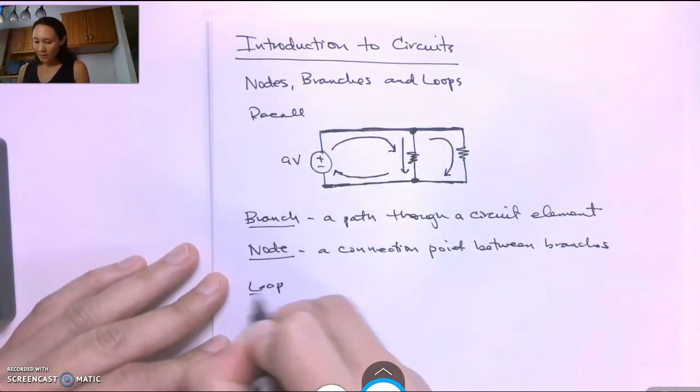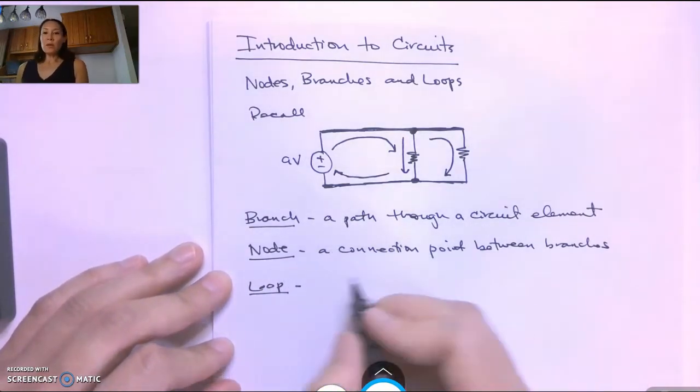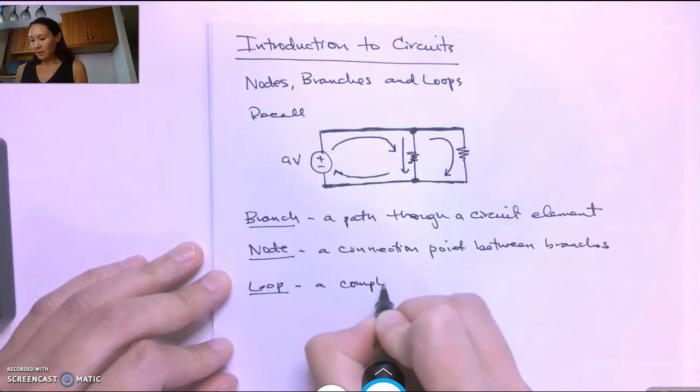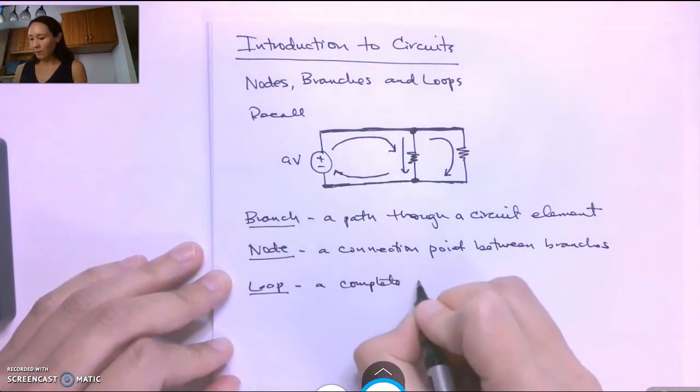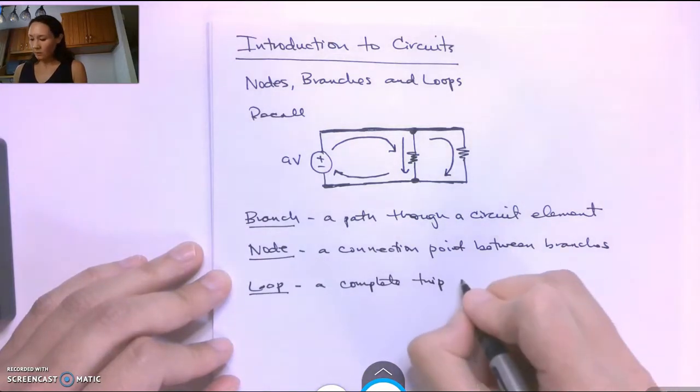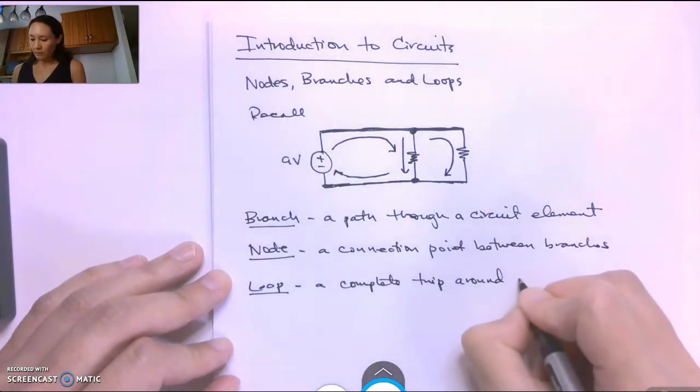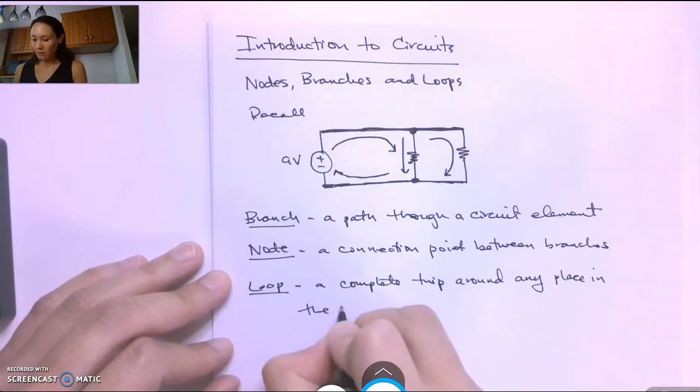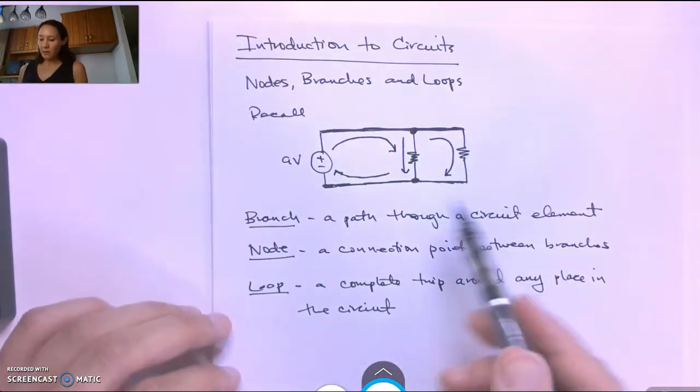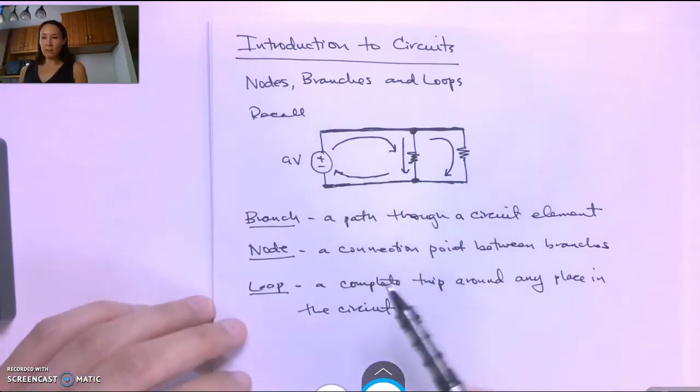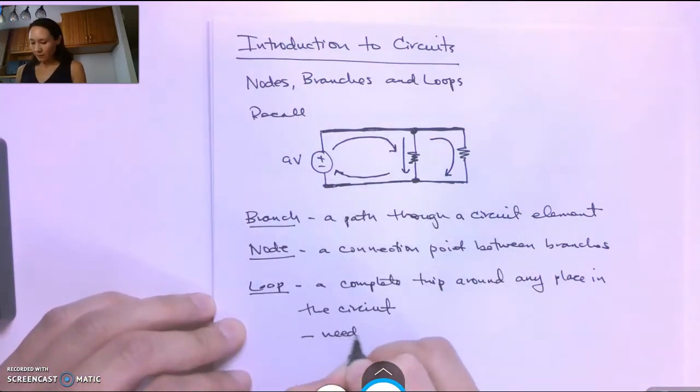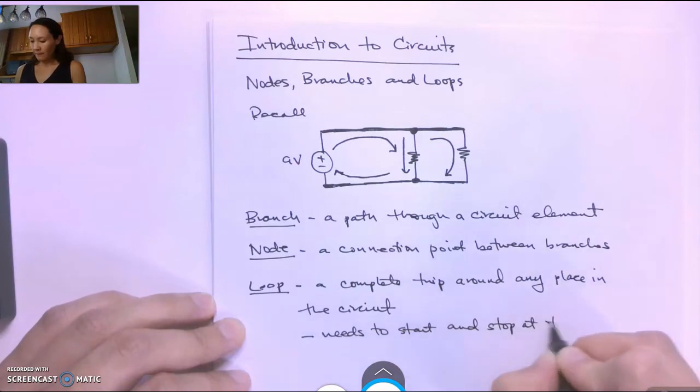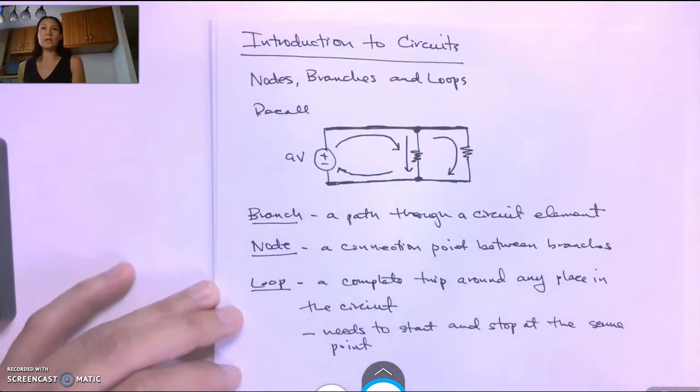Okay so the last term is a loop. The definition of a loop is a complete trip around any place in the circuit. The key things about a loop is it has to start and stop at the same place. Needs to start and stop at the same point. That point doesn't necessarily need to be a node.